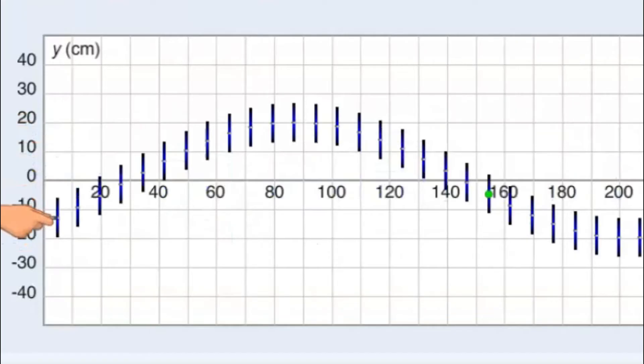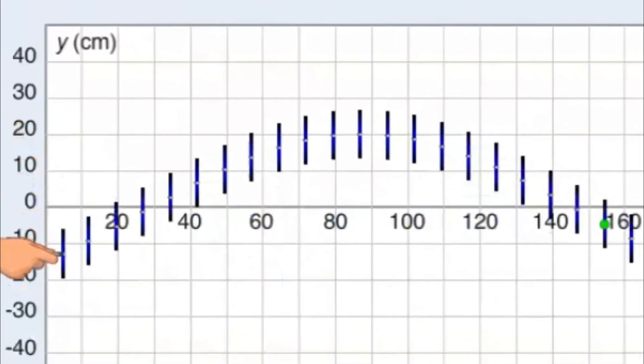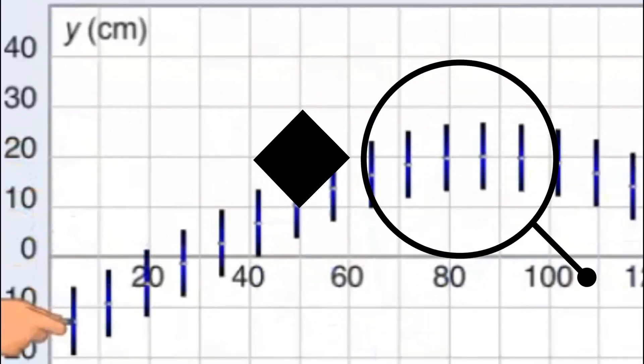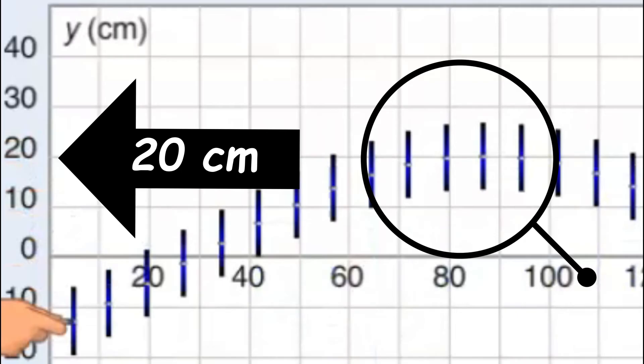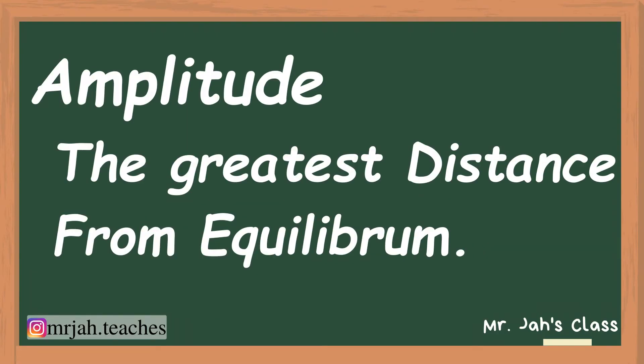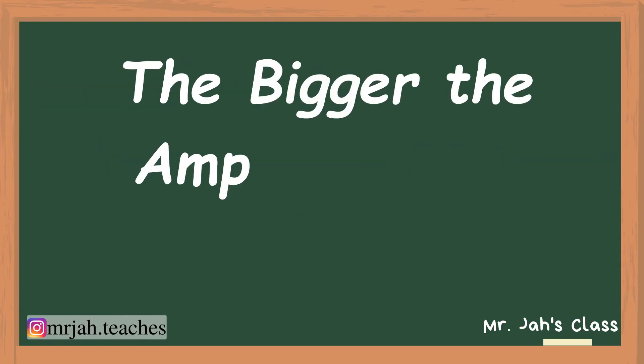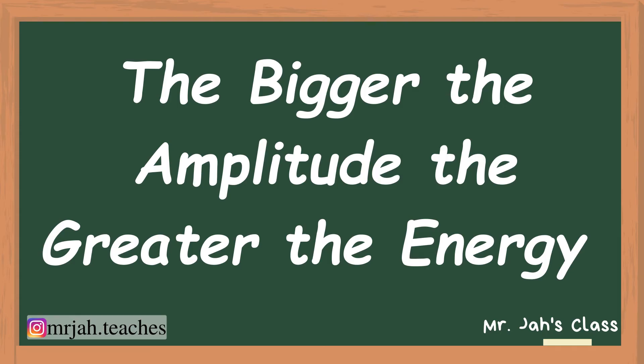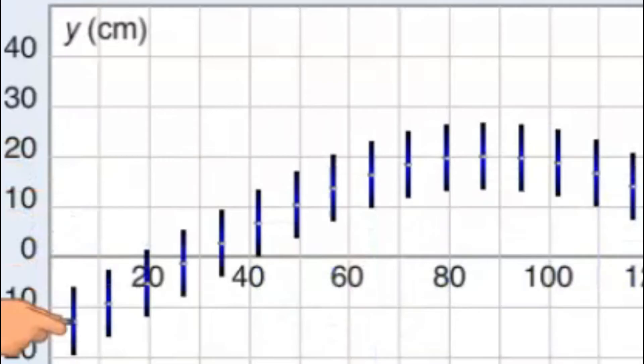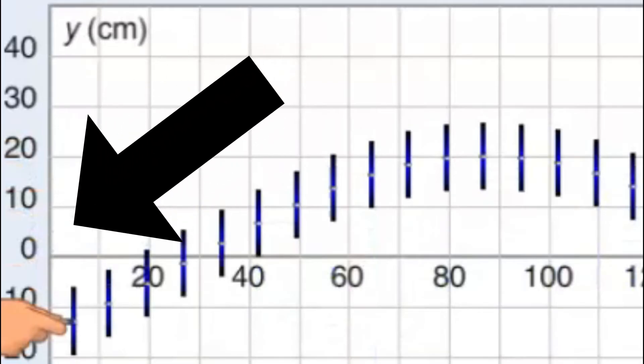In order for you to find the height, you first need to locate the crest. The height of this wave is 20 centimeters. We take a look at the Y axis and we can see 20 centimeters. Now, the height is known as the amplitude. Amplitude is the greatest distance from equilibrium. The bigger the amplitude of the wave, the more energy the wave has. Equilibrium is simply zero on the Y axis.